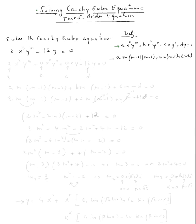The form of the third order equation is ax³y''' + bx²y'' + cxy' + dy = 0. And the characteristic equation is a·m(m-1)(m-2) + b·m(m-1) + c·m + d = 0.